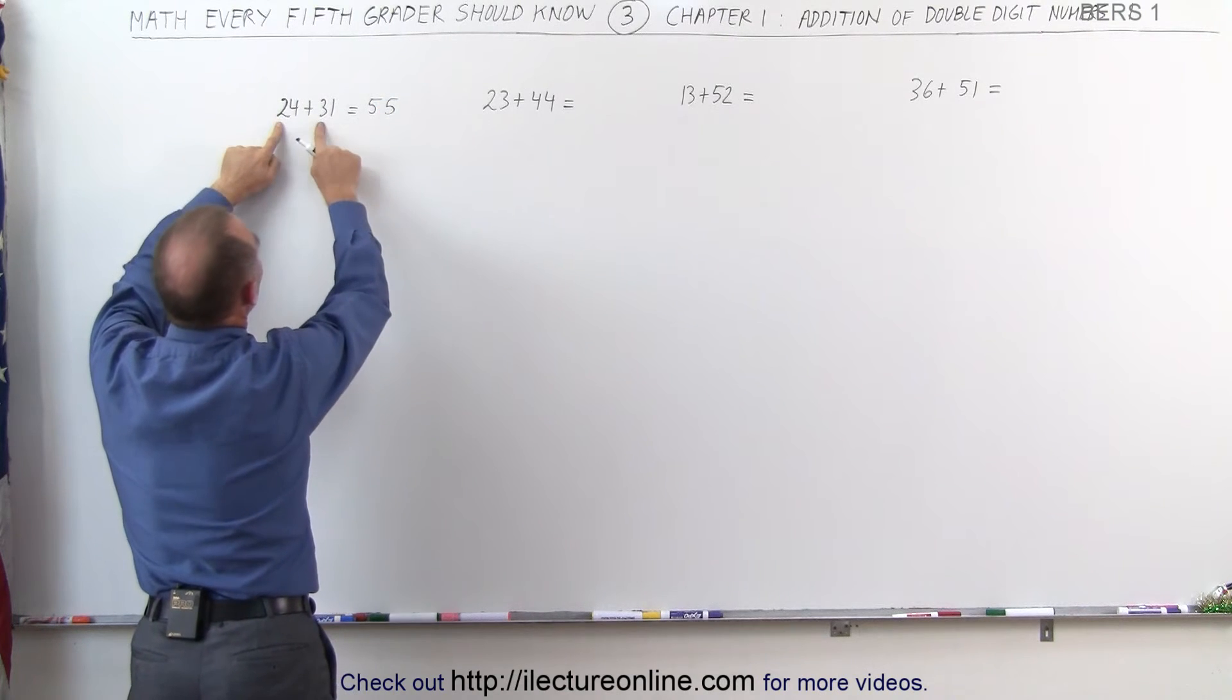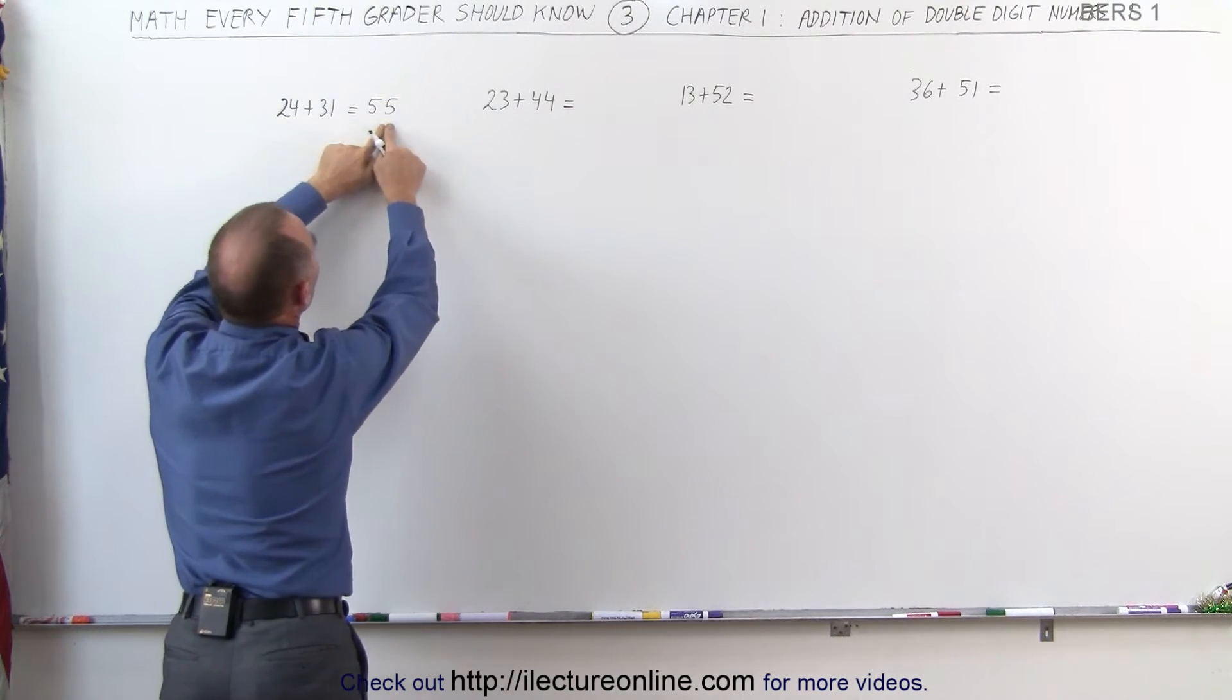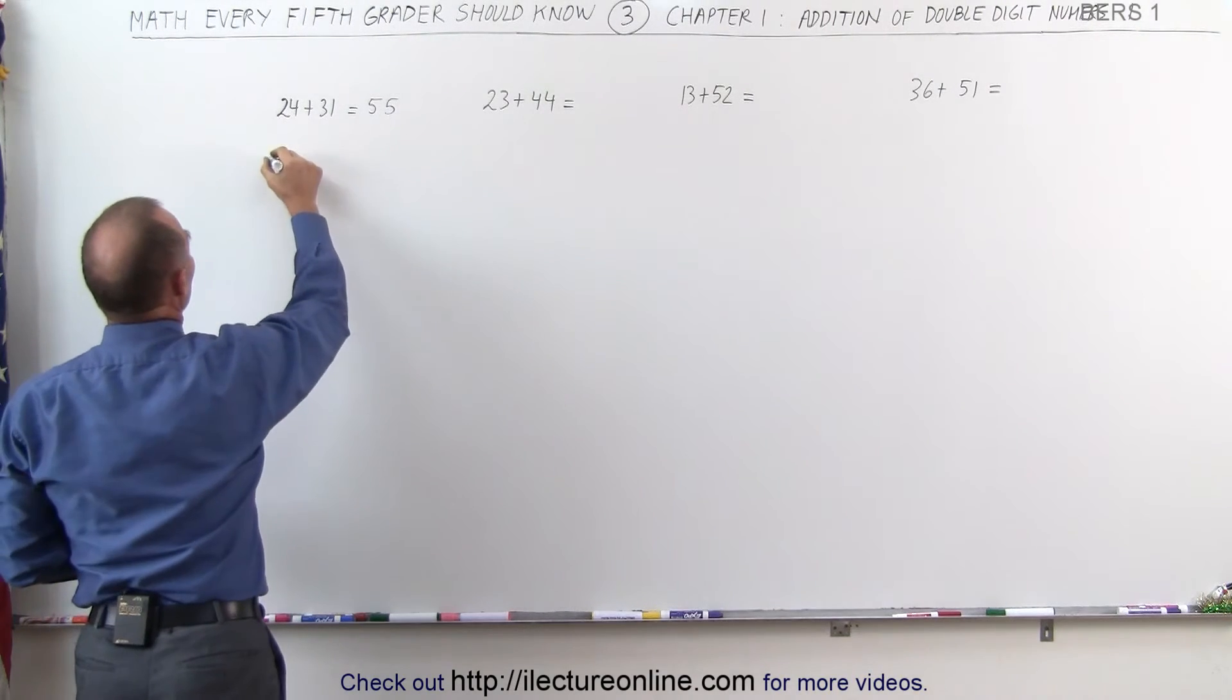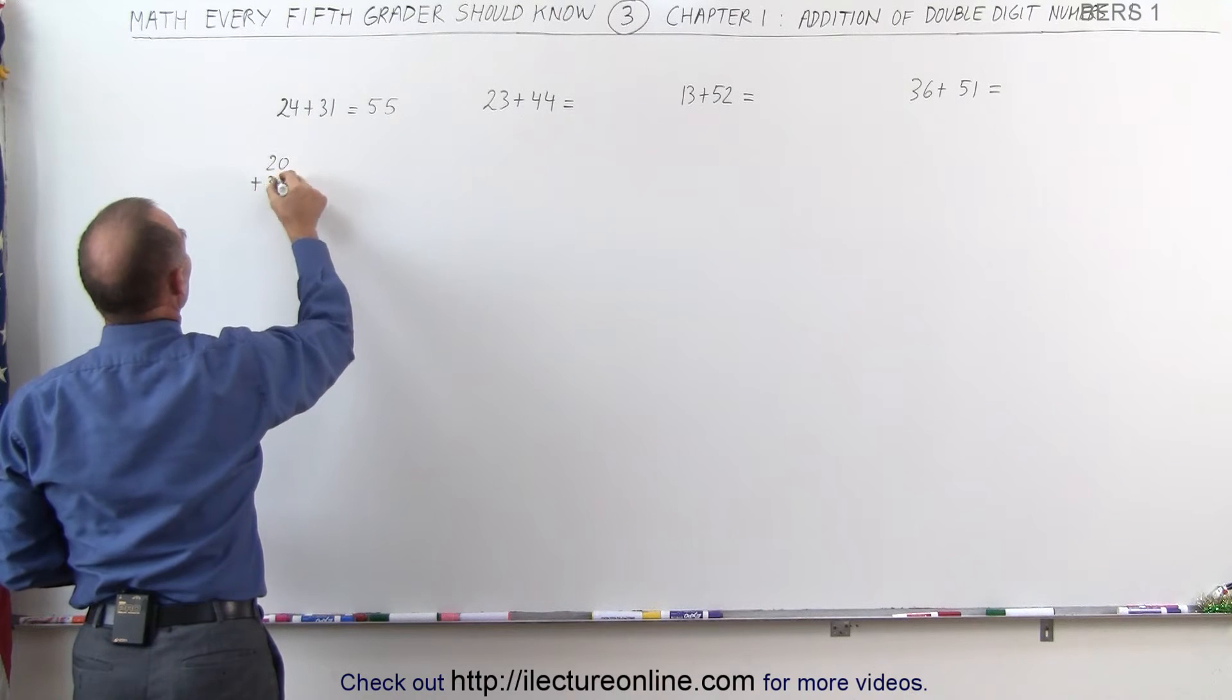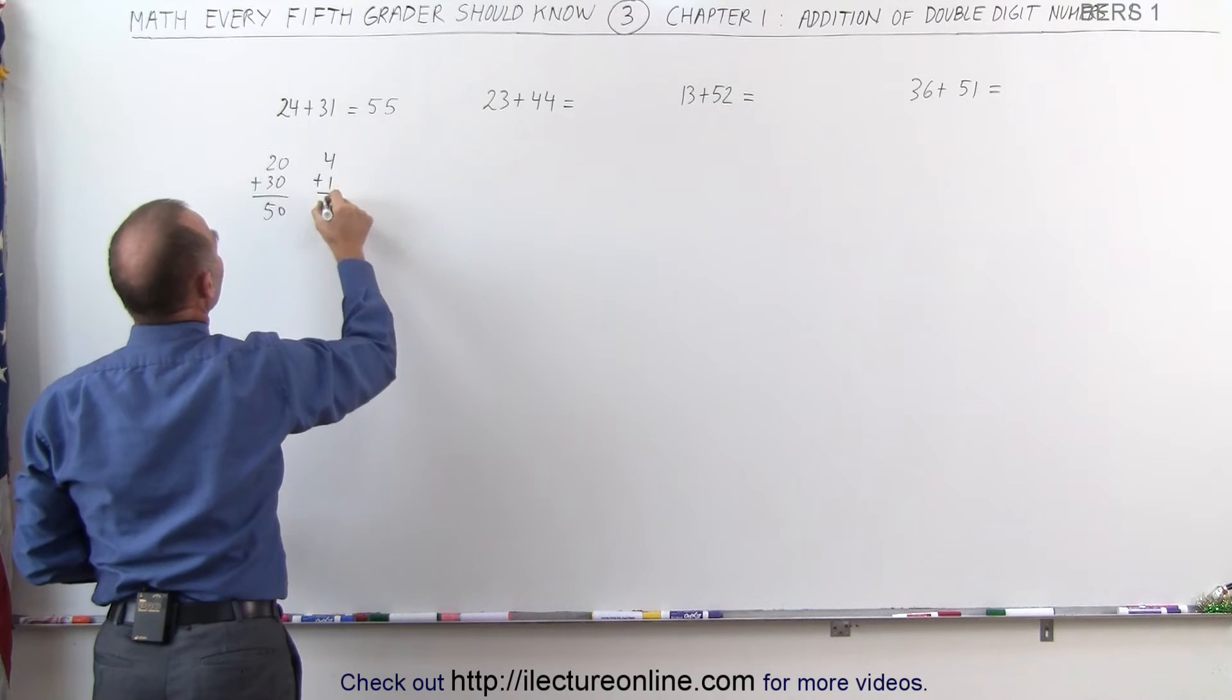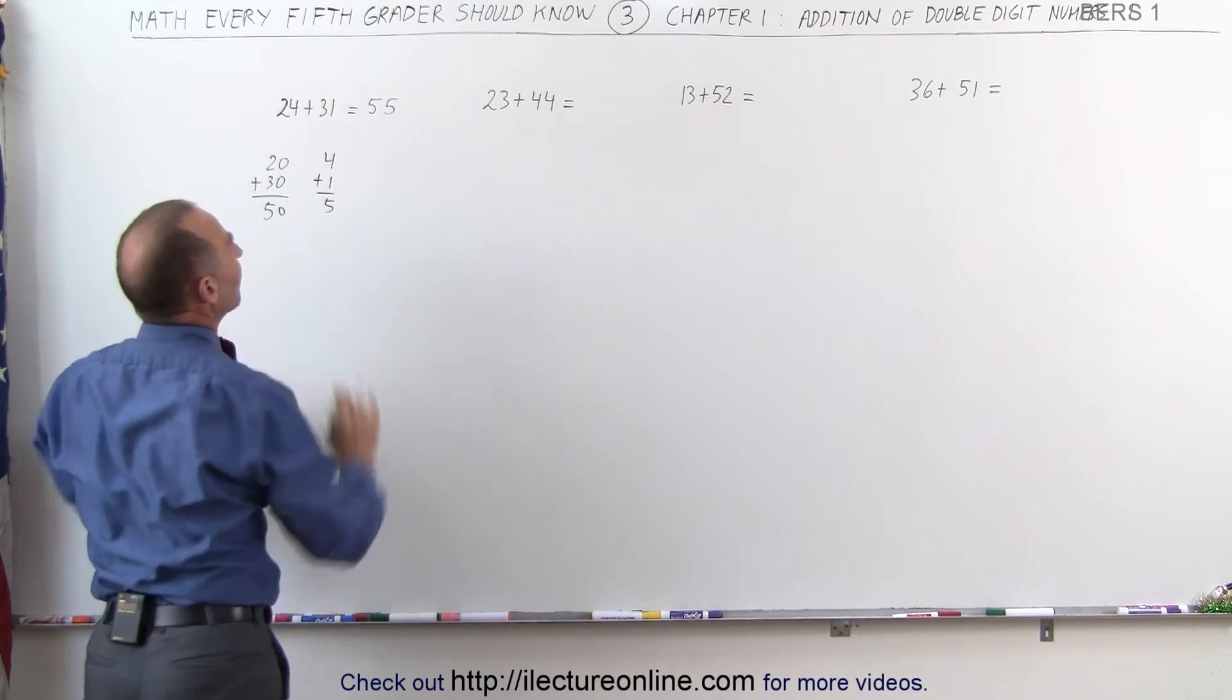In other words, 20 plus 30, and 4 plus 1 gives me 50 plus 5, or 55. Let's write that down. We have 20 plus 30 from the first two numbers, that is 50. And we have 4 plus 1, that is 5. Add them together, you get 55.